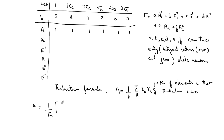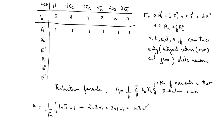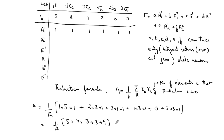So we compute: (1/12) × [1·5·1 + 2·2·1 + 3·1·1 + 1·3·1 + 2·0·1 + 3·3·1]. The zero term doesn't count. This gives (1/12) × [5 + 4 + 3 + 3 + 0 + 9] = (1/12) × 24 = 2. This is a whole number, confirming our calculation is correct.